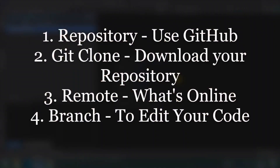Before moving on to the commands, let's quickly cover some basic Git terms. Repository: a repository is where you store your project's code online. GitHub is widely used by beginners and experts to host repositories for free. Git clone: in order to download a repository to your local computer to use or edit the code, you need to Git clone it.